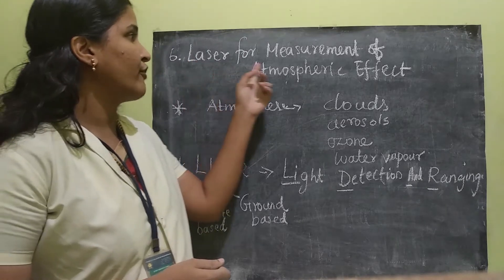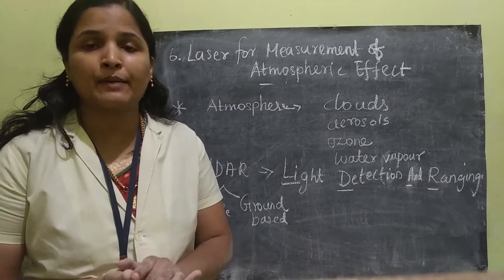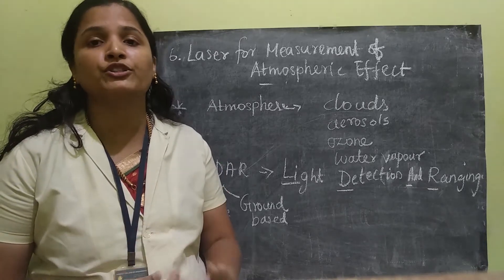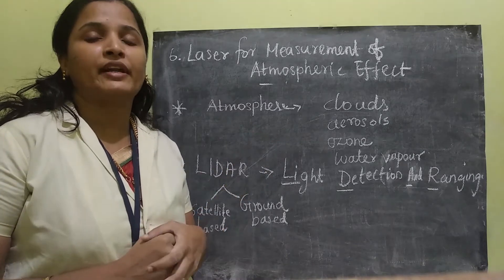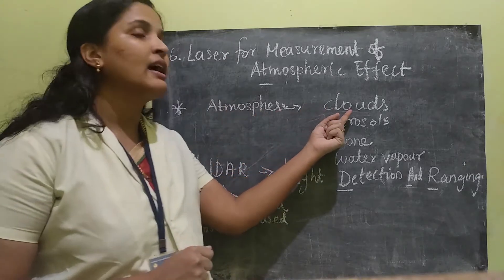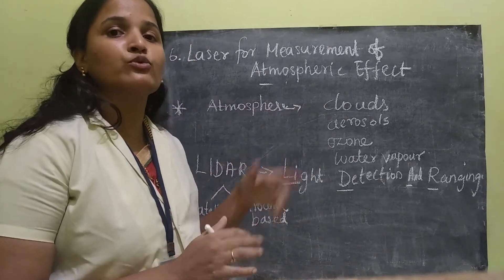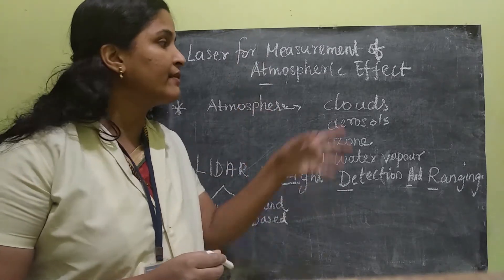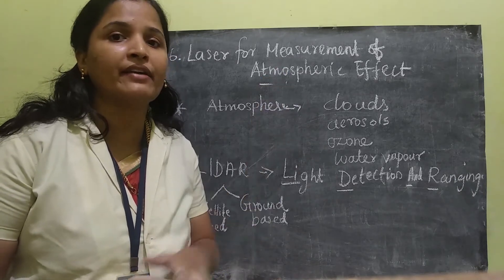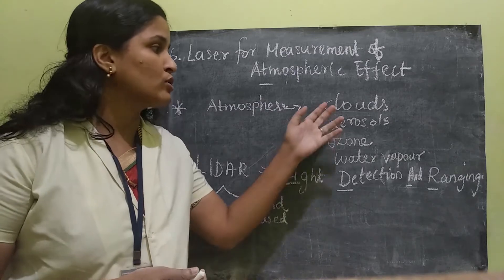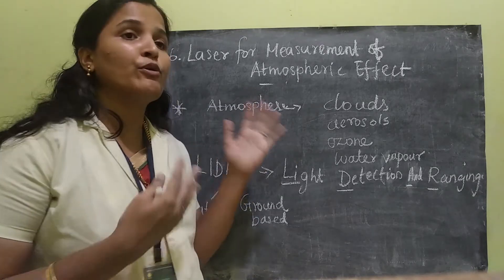The next topic is laser for measurement of atmospheric effects. The study of atmosphere is very important in order to monitor climate change and global pollution. Laser plays an important role in monitoring the atmospheric effects. This laser is used for monitoring atmospheric components such as clouds, aerosols, ozone, and water vapor. The advantage is it can penetrate even inside the cloud, whereas other remote sensing techniques have the drawback that they cannot penetrate into clouds or water vapor. This limitation can be overcome by using laser technology.